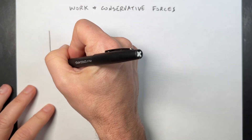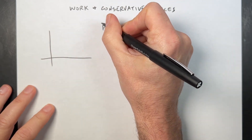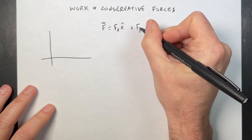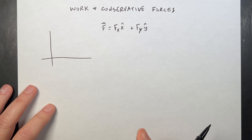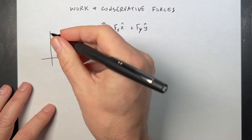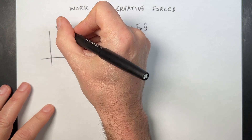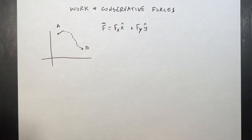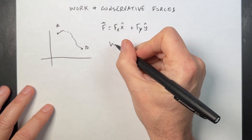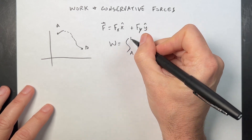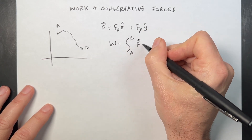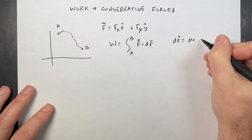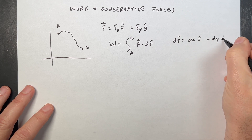Suppose I have some path right here. I have some force function: F is some function f of x in the x direction plus f of y in the y direction. So I'm only going to do this in two dimensions for now — we can do three dimensions later. I want to go from point A to point B along some path. We can calculate the work as the integral from A to B of F dot dr, where dr is the vector dx x-hat plus dy y-hat.